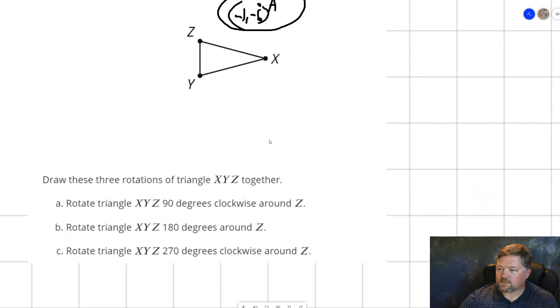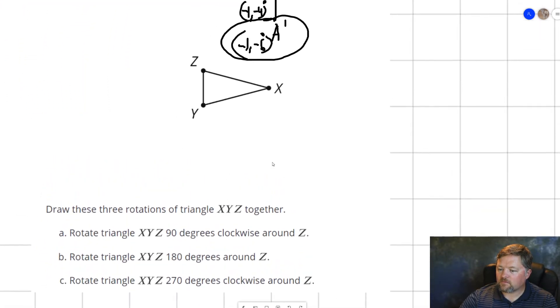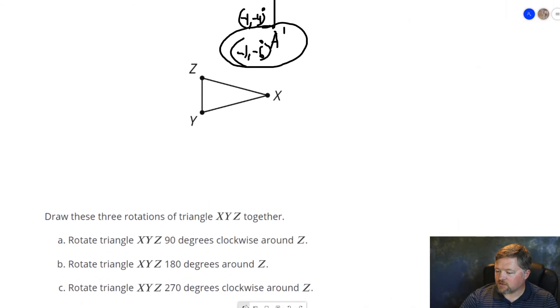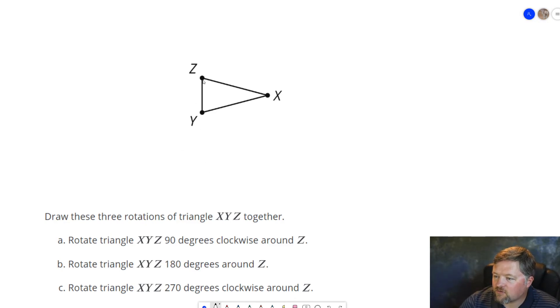Here's triangle X, Y, Z. Draw these 3 rotations. Erase that stuff that we still had showing. Rotate X, Y, Z 90 degrees around point Z. I'll do this one in black. So that's X, Y, Z. We want to rotate 90 degrees clockwise. That's 90 degrees clockwise around point Z.